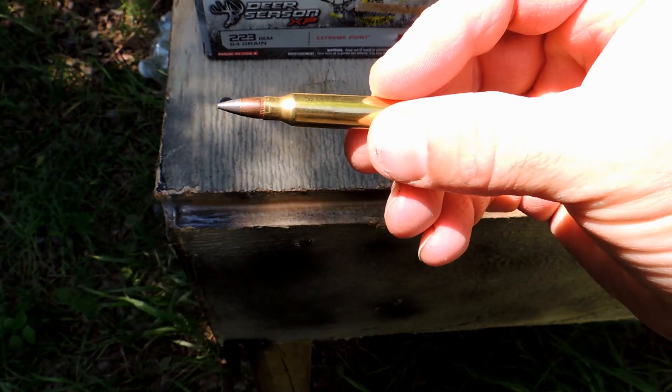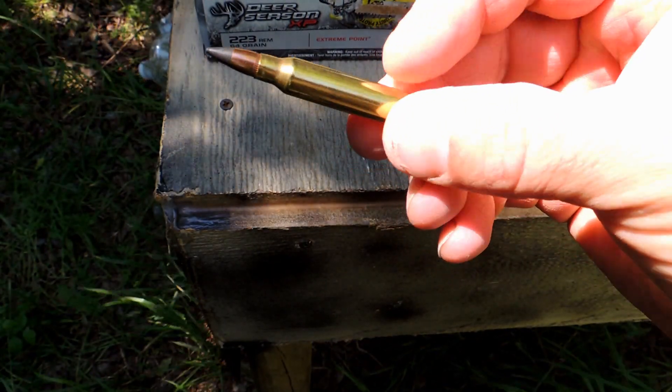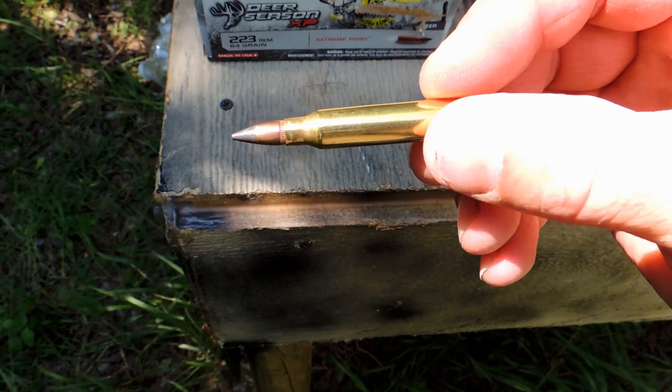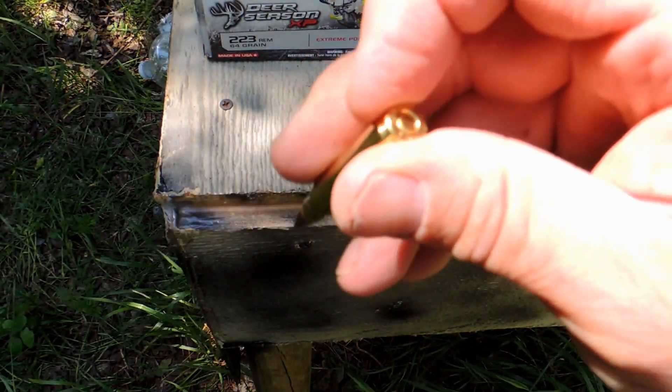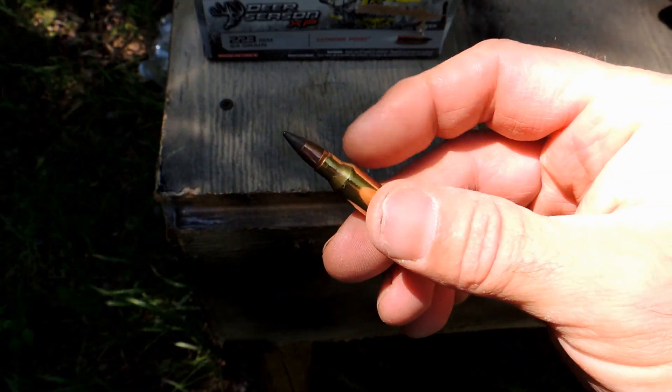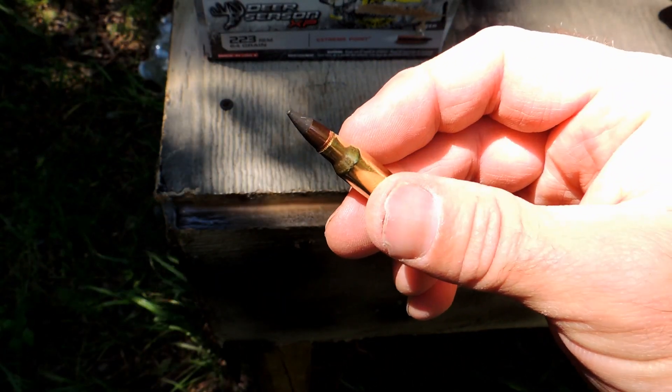Alright, doing a flight trajectory, wider trajectory of the Winchester Deer Season XP. This is in 223, 64 grain bullet, and we're gonna see the flight path of the bullet and how it does.